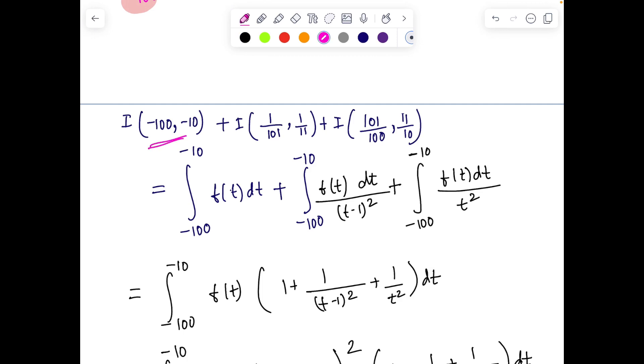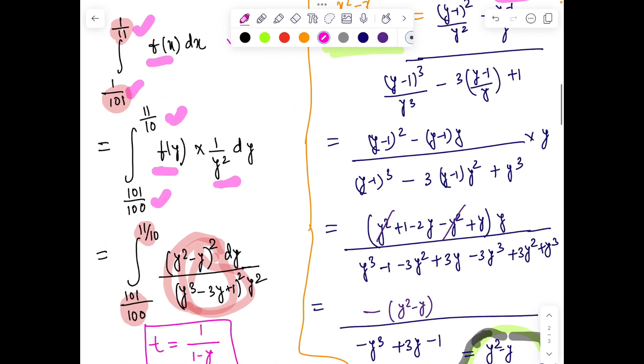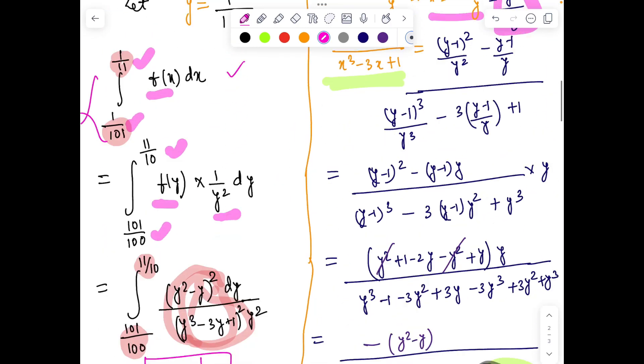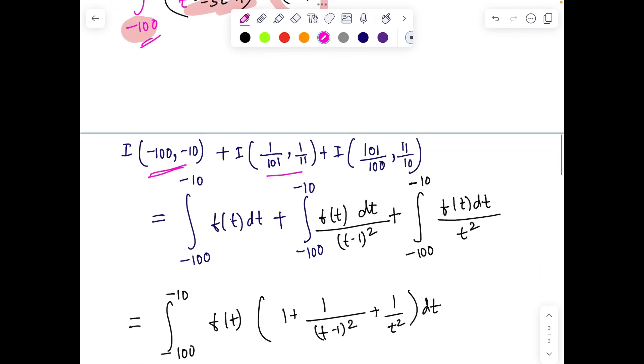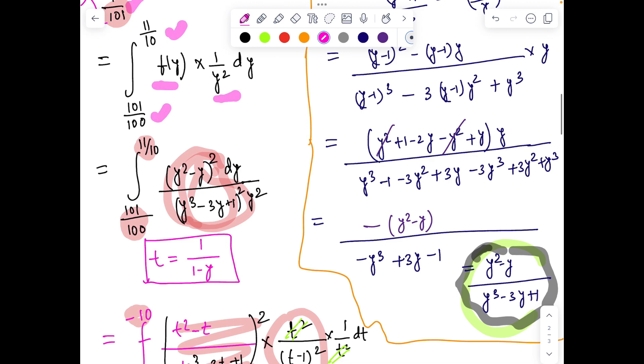I(1/11, 11/10) can be written in terms of -100 to -10 with this expression: f(t)/((t-1)/t)². The third quantity is the same. If I convert I(1/100, 11/10), y² will not be there because y² comes from the previous substitution.